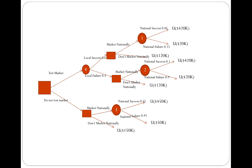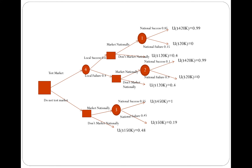Instead of looking at expected value, we look at decision-making with regard to risk using a utility function. Everything is very similar to the previous case, but instead of using actual values, we apply the utility of those values — everything else is done exactly the same way. We consider expected utilities to make our decisions in the decision tree. Suppose the utility numbers are given: utility of $420,000 is 0.99, utility of $20,000 is 0.4, utility of $450,000 is 1, utility of $50,000 is 0.19, and utility of $150,000 is 0.48.